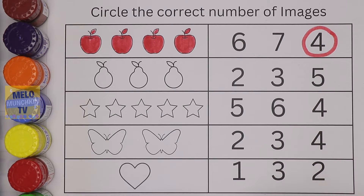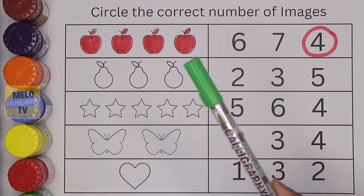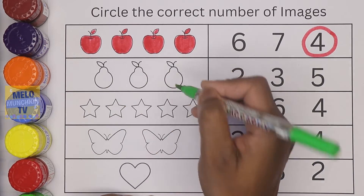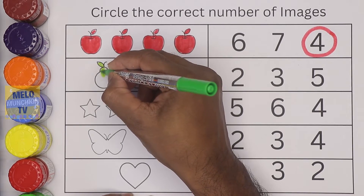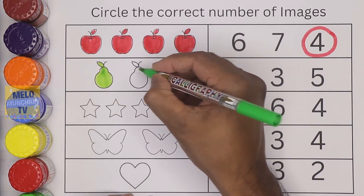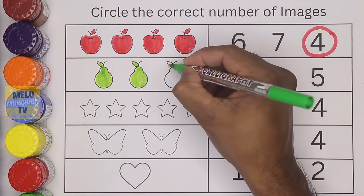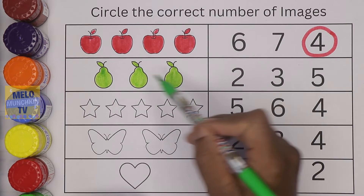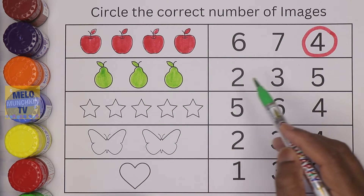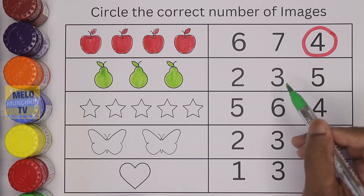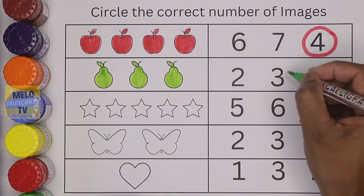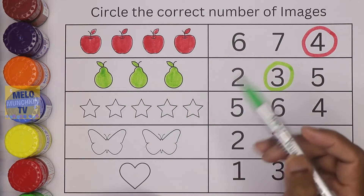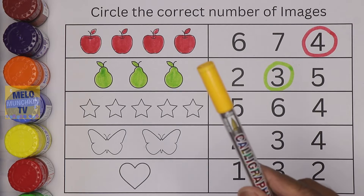Next, I'll take light green color and color these pears. These are pears, let's color them. One, two, three. So we have three pears. Let's see — this is number two, this is number three, this is number five. So number three is the right answer. Three pears!